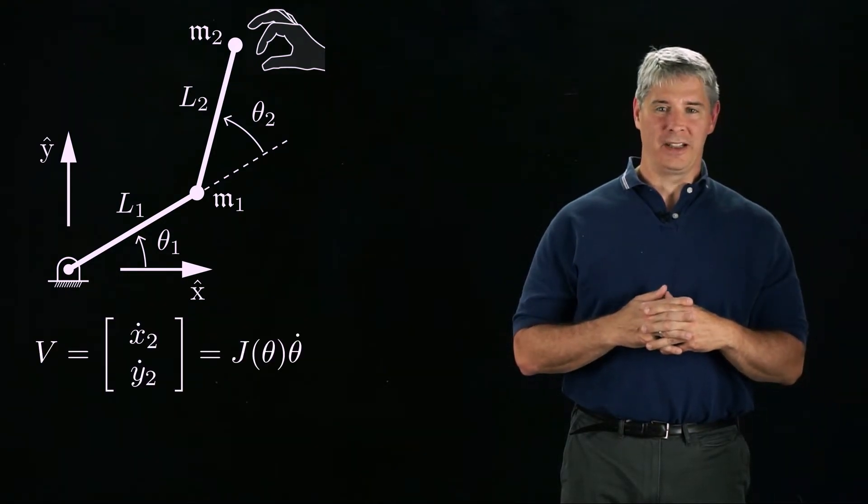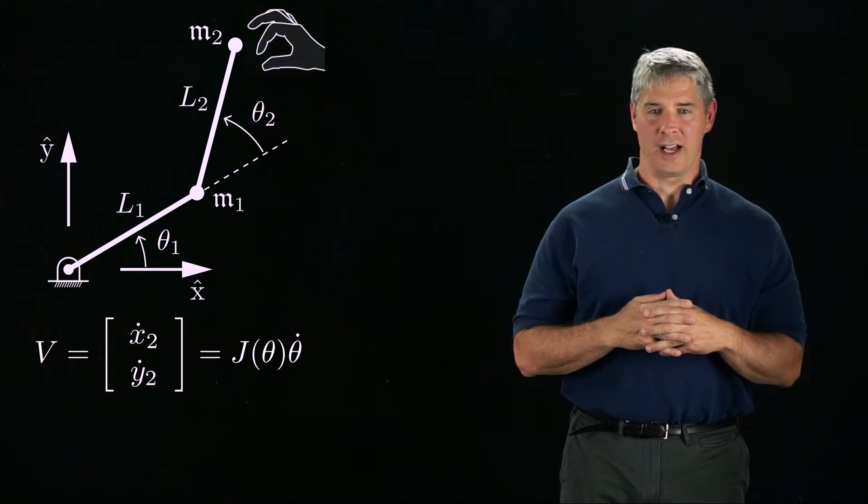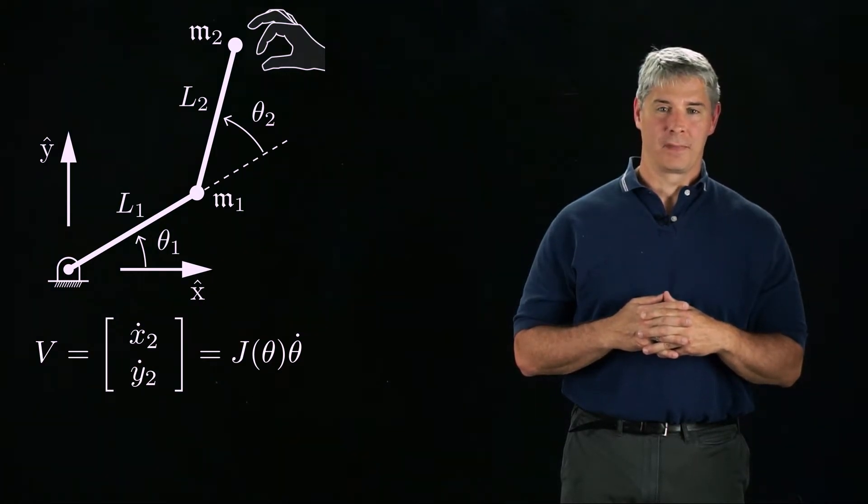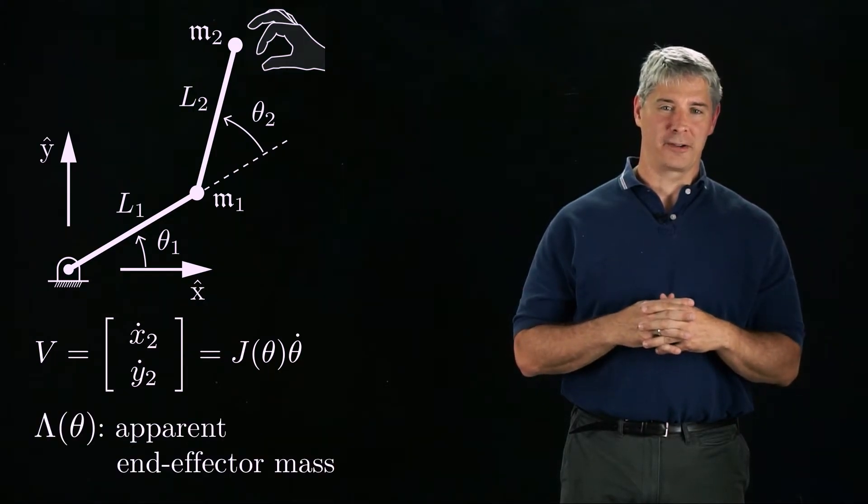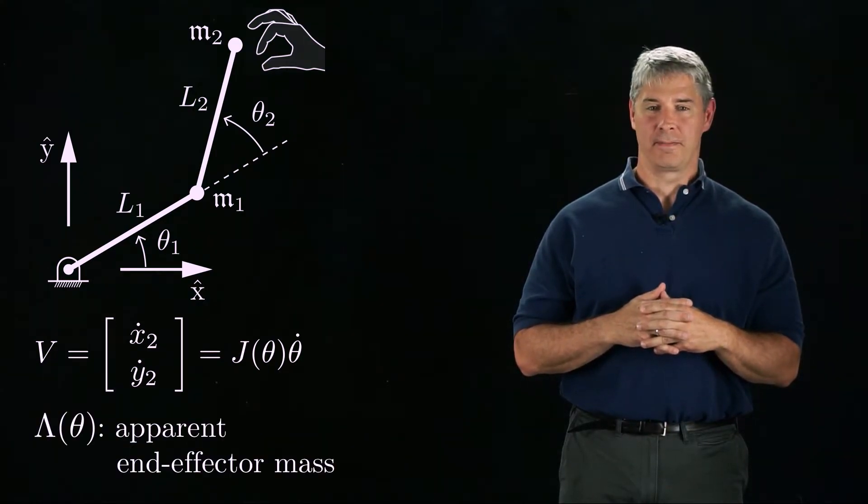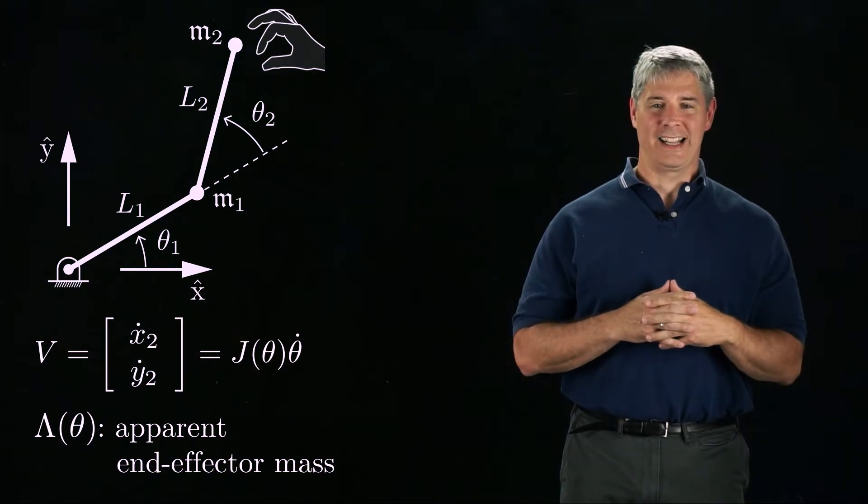Let's say that V is the endpoint linear velocity related to the joint velocity by the Jacobian J. When you linearly accelerate the endpoint, you will feel an apparent mass at the end effector that depends on the joint configuration. We call this apparent mass lambda of theta.